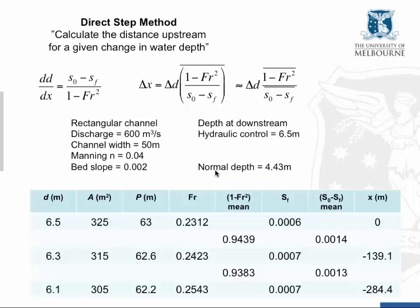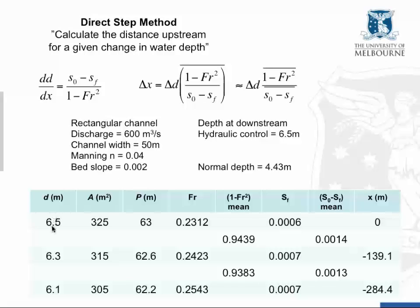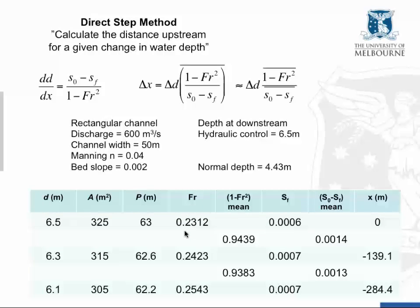In the first row, we start at the downstream control, which has a depth D of 6.5 meters above the bed — not above the crest of the weir. The cross-sectional area at that point is 325 square meters, calculated from the known width and depth. The wetted perimeter is 63 meters for this rectangular channel.